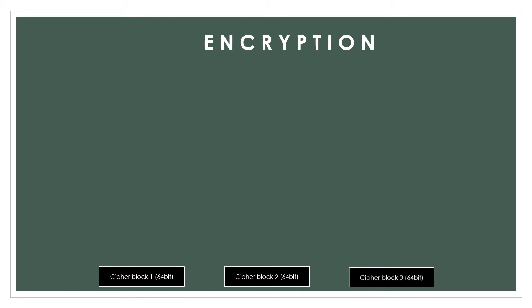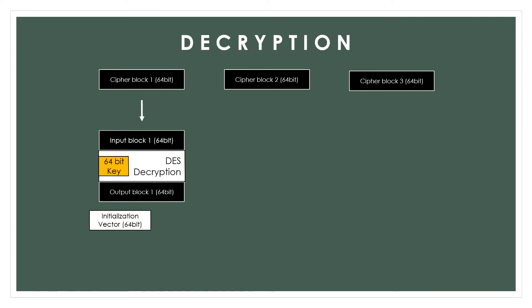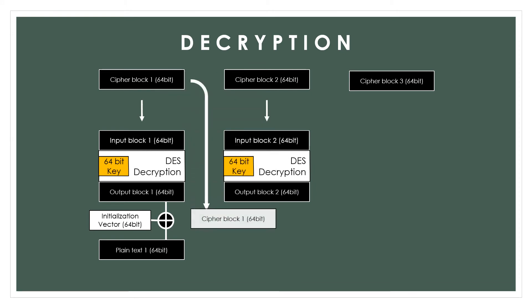As for the decryption process, the first block of cipher text is decrypted with the same encryption standard used for encryption — in this example, DES decryption — and the same key used for encryption will be used to decrypt. Then the output from DES will be XORed with the same initialization vector used during encryption, resulting in the first block of plain text.